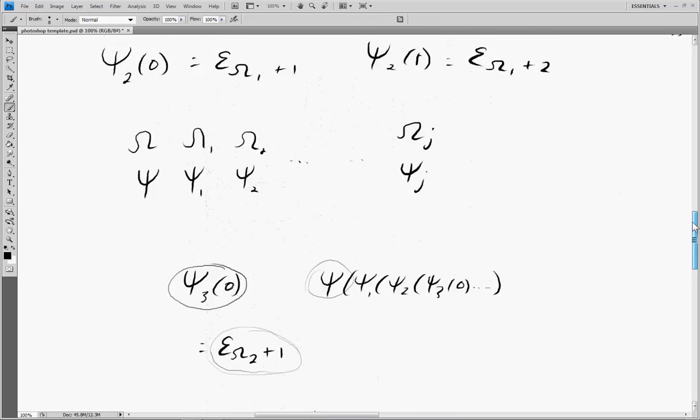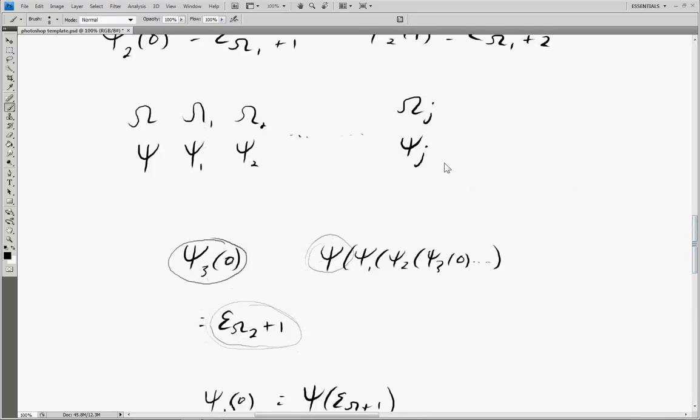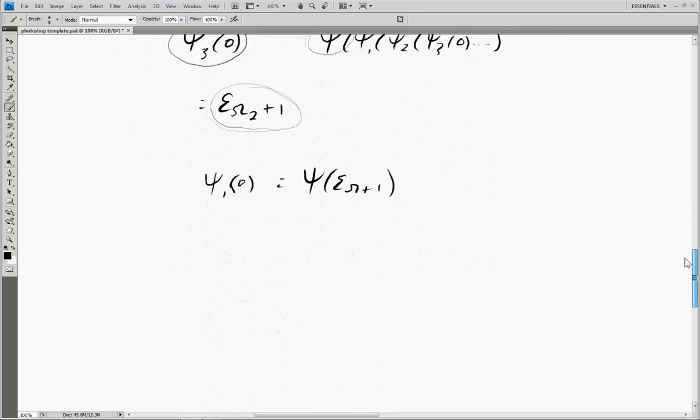So now the next logical step, once we get into an arbitrary subscript here of a psi function, is to start injecting infinite ordinals. And we can do that. So we can have something like psi omega of 0. And you can think of this as being the fundamental sequence of psi 1 of 0, psi 2 of 0, psi 3 of 0, et cetera. So there's nothing stopping us from putting infinite ordinals in the subscript.